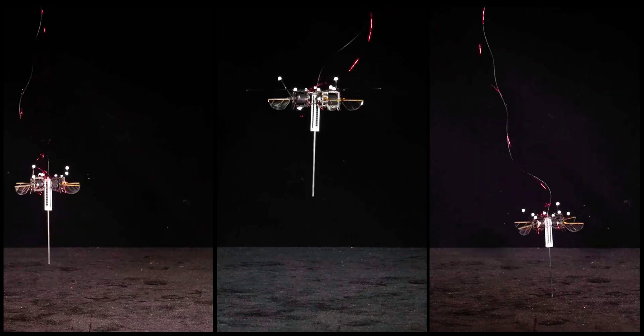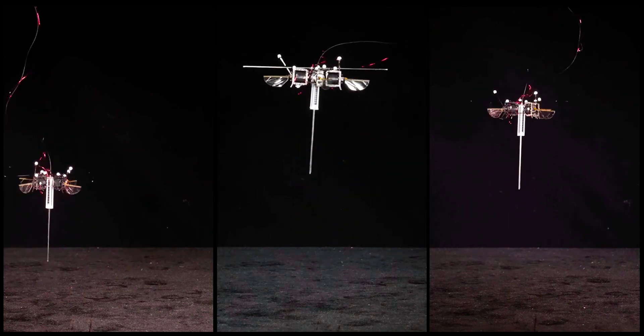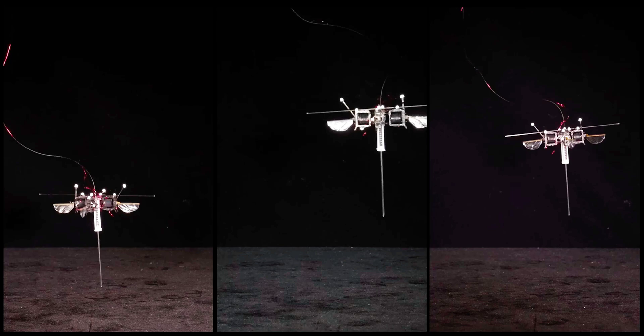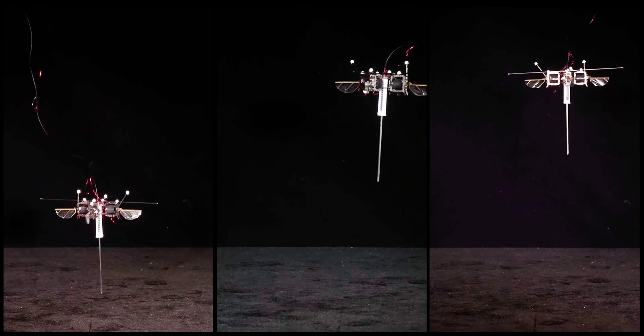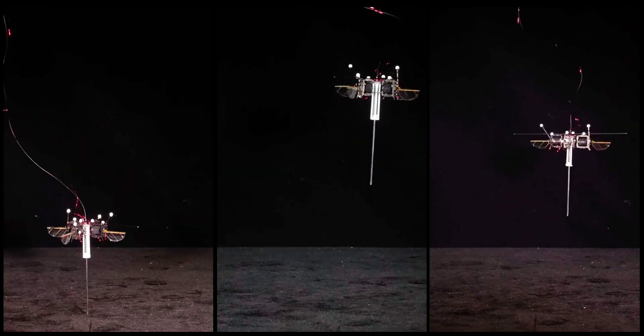Jumping is common among insects, from fleas that leap onto new hosts to grasshoppers that bound around a meadow. While jumping is less common among insect-scale robots, which usually fly or crawl, hopping affords many advantages for energy efficiency.